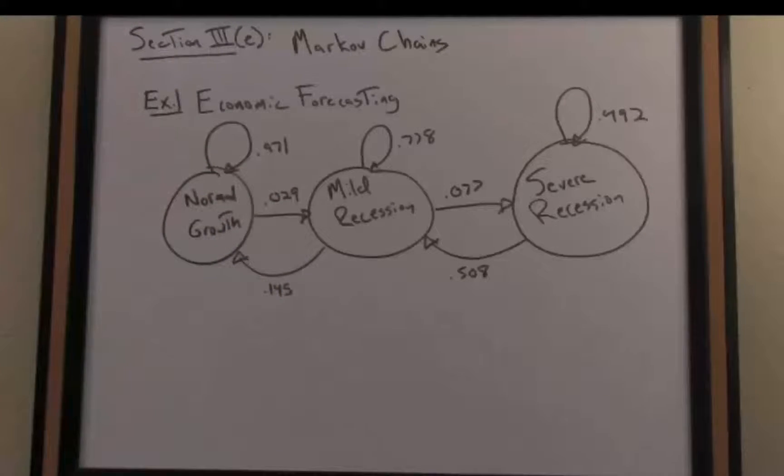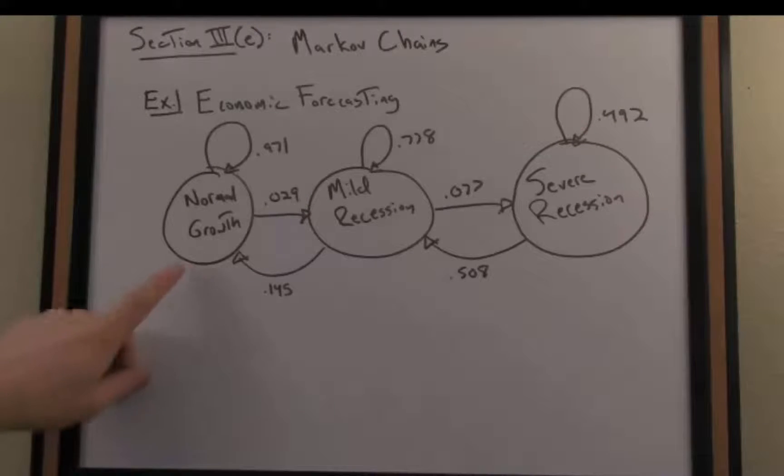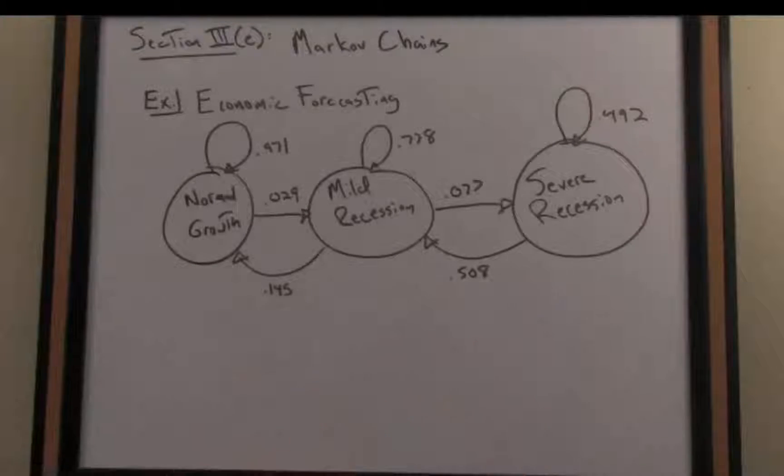Now there aren't arrows between each of the nodes in which case there would be probability zero. So because a mild recession represents something of an intermediate outcome, there is no direct arrow between normal growth and severe recession or vice versa, that probability is zero. First we have to devolve into a mild recession before we hit a severe recession.